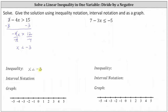Before we give the solution using interval notation, let's graph the solution. The solution is x less than negative three. Because x is not equal to negative three, only less than negative three, we make an open point on negative three and an arrow to the left, where values are less than negative three. If we continue going left, we would approach negative infinity.